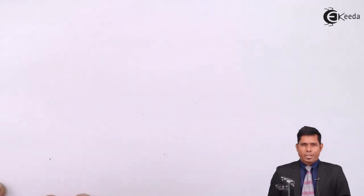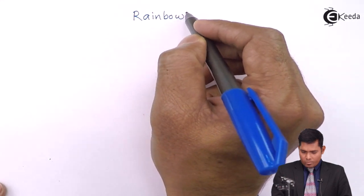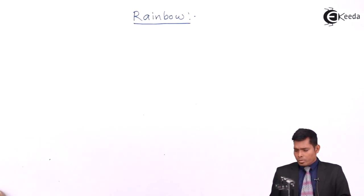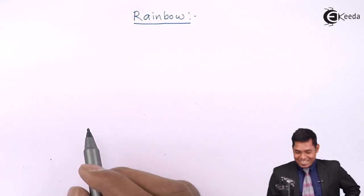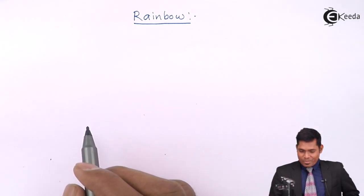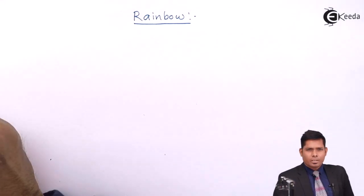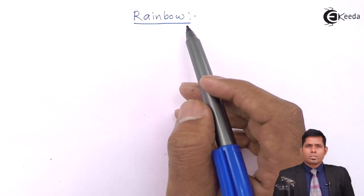Today we will discuss the formation of a rainbow. A rainbow is a bow of seven colors formed during the rainy season, when the rain has stopped and suspended water droplets are in the atmosphere and there is bright sunlight.